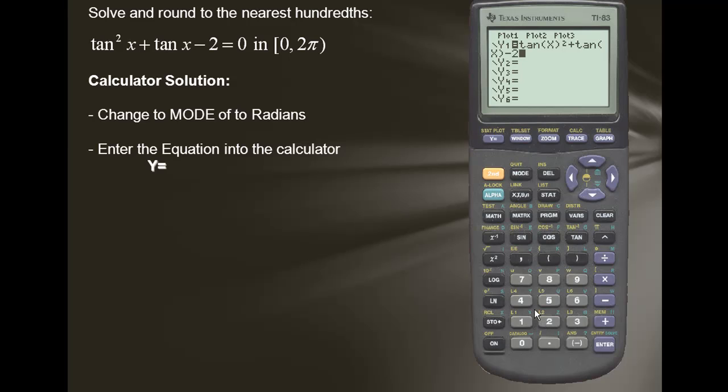Since we're graphing a trig function, we'll use the zoom trig, which will put our x-axis in a radian measure.